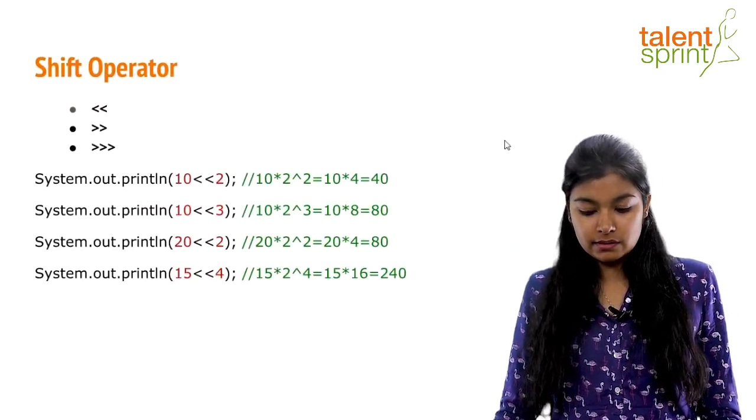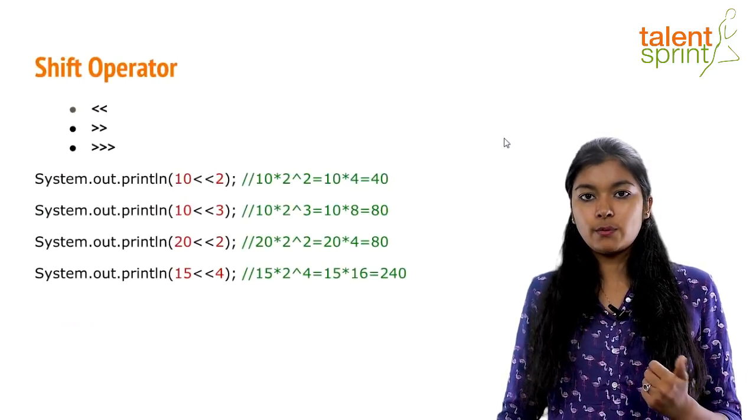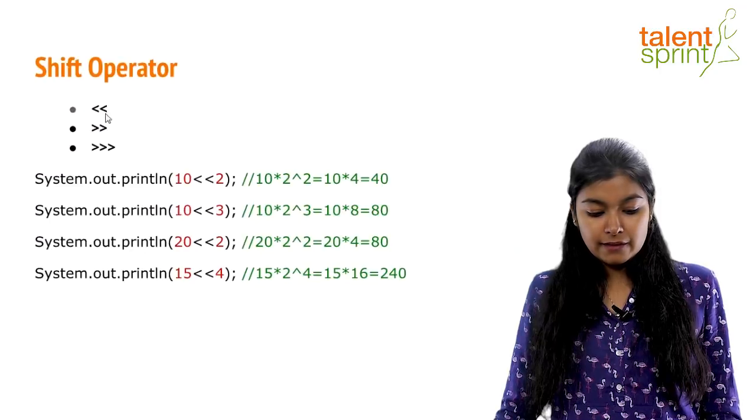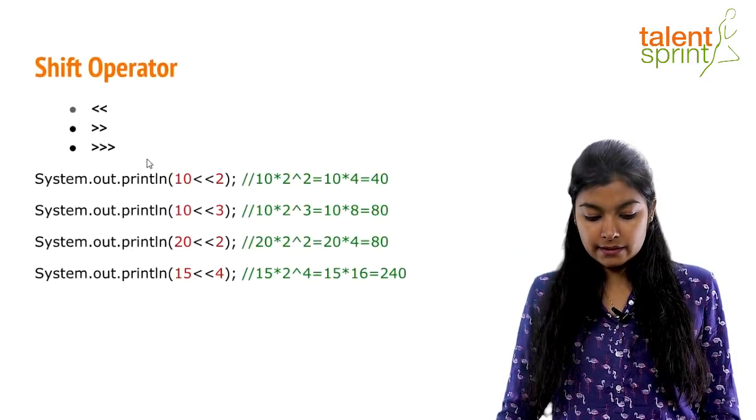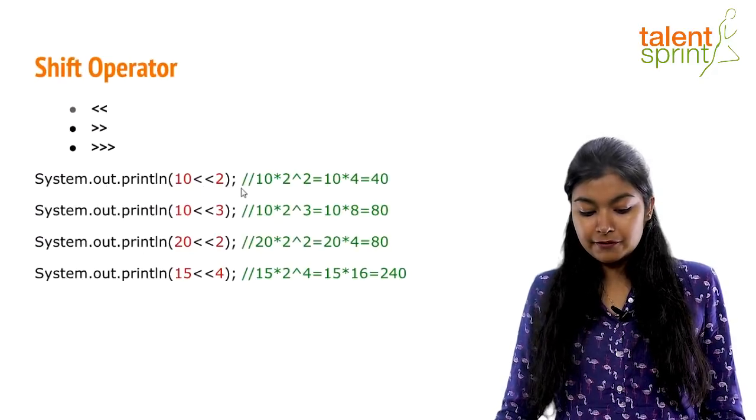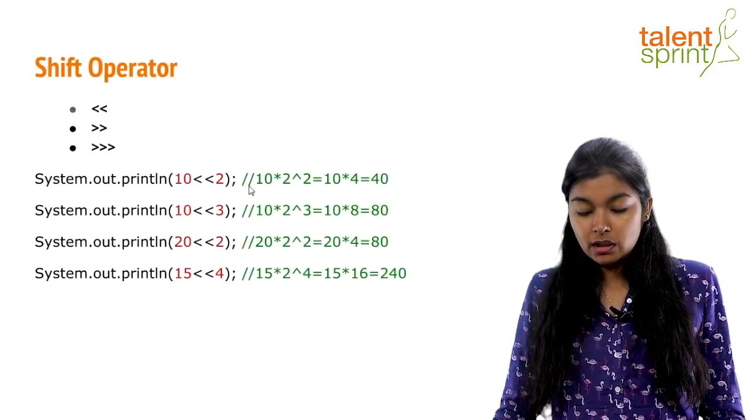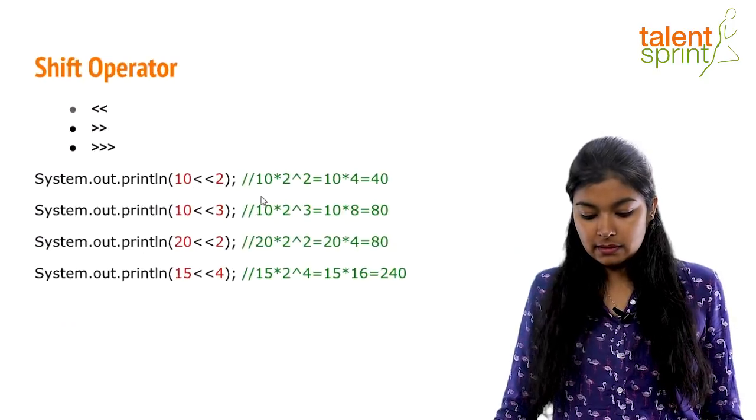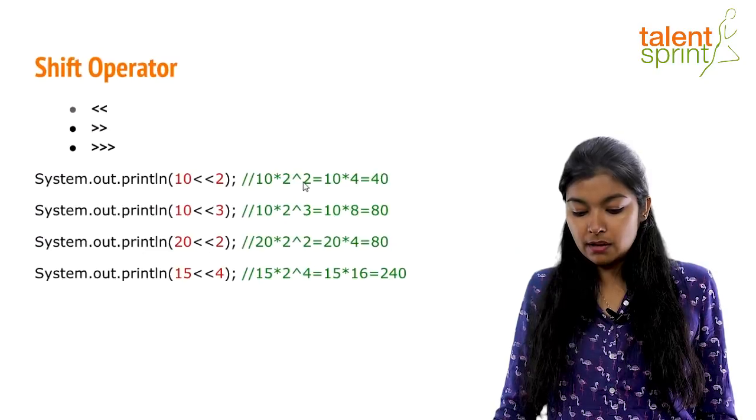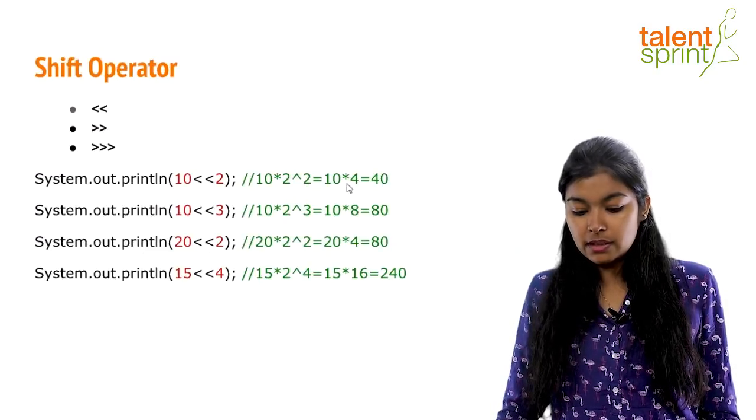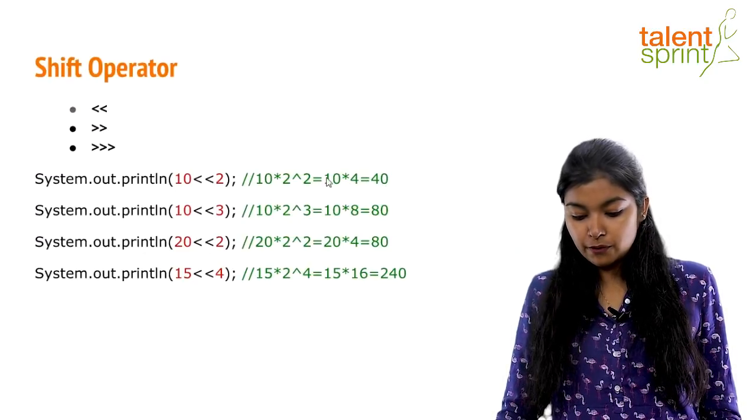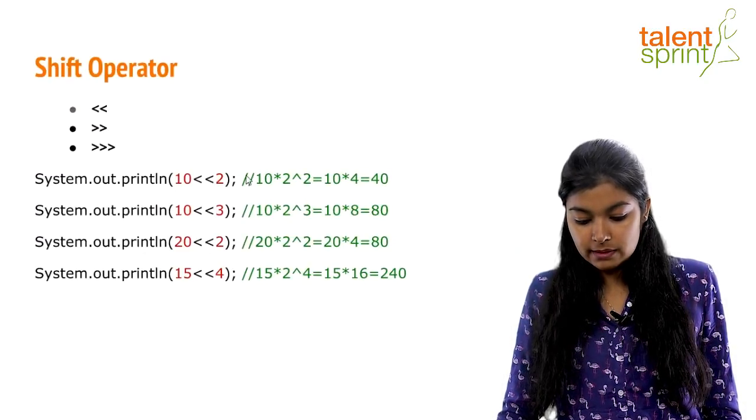Then we have shift operators. Now you might have seen questions on these shift operators. So we have left shift, we have right shift and we have zero fill right shift. Now system.out.println if you do a left shift 10 << 2, what actually happens is 10 multiplied by 2 to the power of 2. That is 10 multiplied by 4 which is 40. So when you do this you get the output 40.